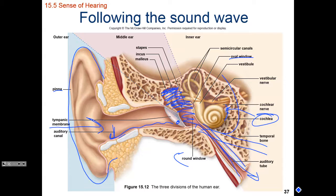When you have tubes in your ears and are in a swimming pool, you can plug your nose, blow hard, force air up the auditory tube into the middle ear and out through the tube — literally blowing bubbles out of your ear. Eventually those tubes fall out on their own and the tympanic membrane heals. Typically, ear tubes allow a year or two of increased drainage and decreased likelihood of developing ear infections.